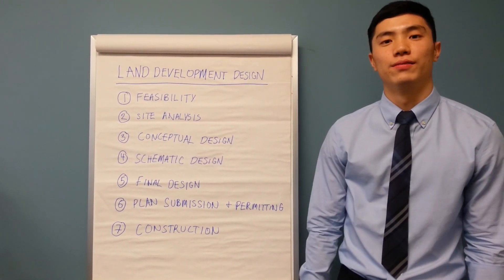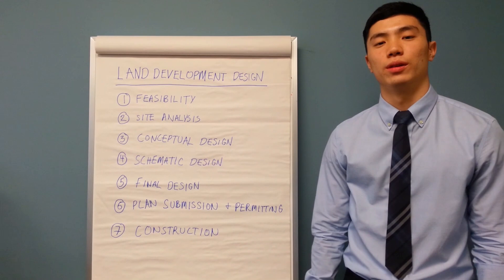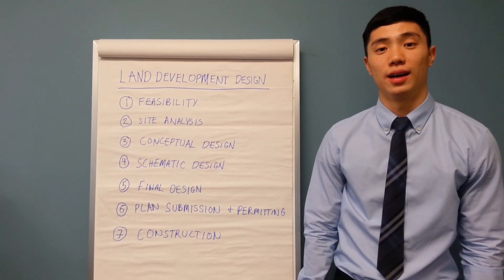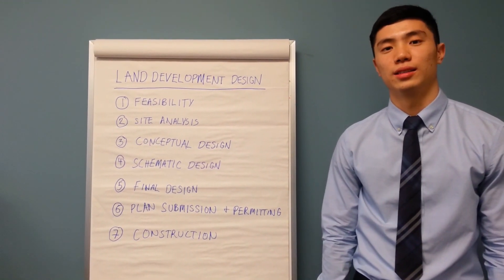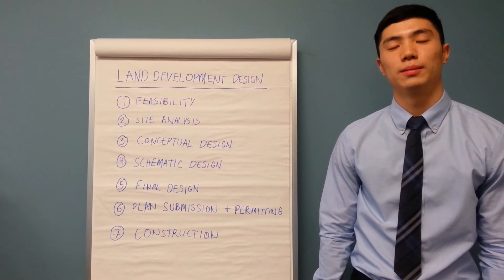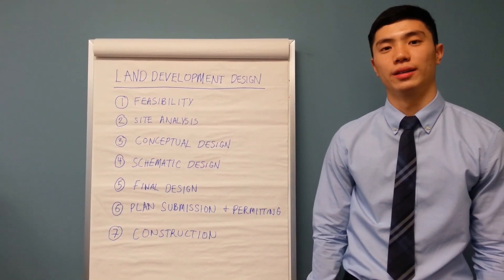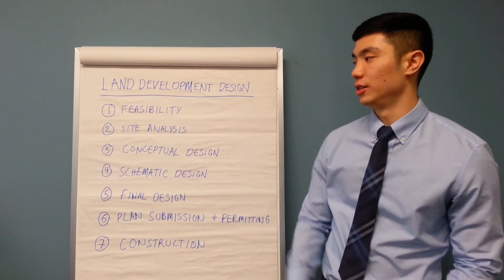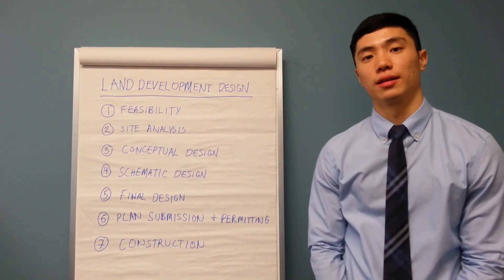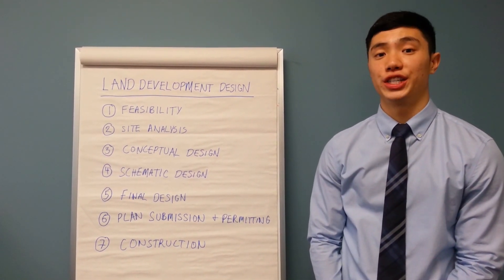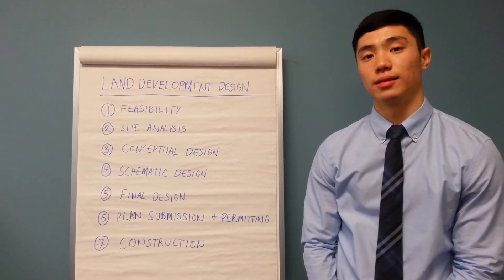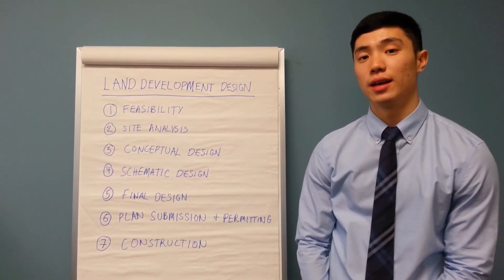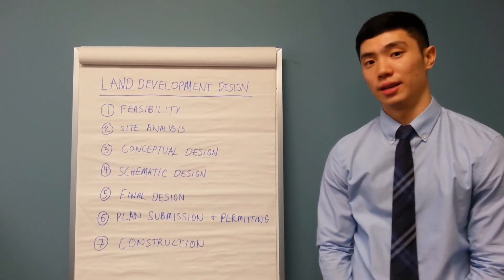Land development is the conversion of land from one use to another, usually of greater intensity. Land development design is a systematic approach that uses planning, analysis, and engineering. Steps one and two, feasibility and site analysis, usually can be conducted concurrently. Here the engineer or developer will assess the site's impacts, the risks, and the opportunities that it poses.